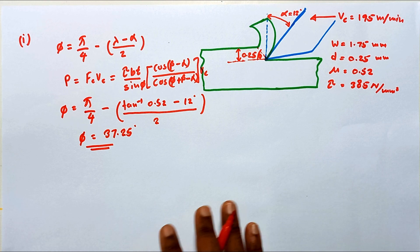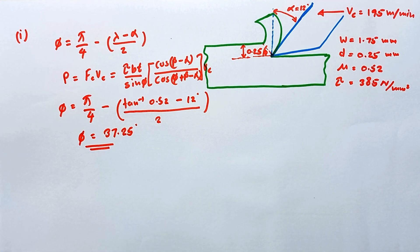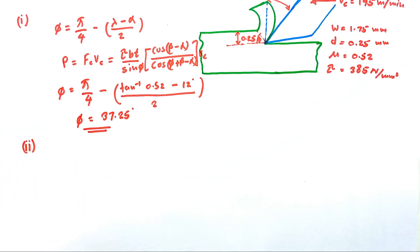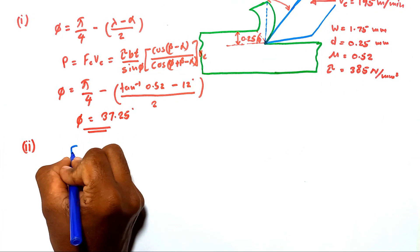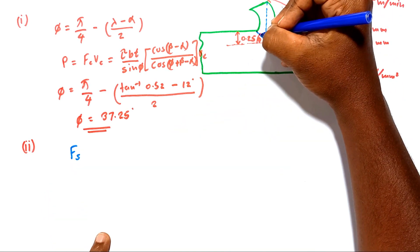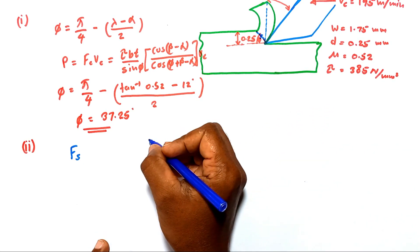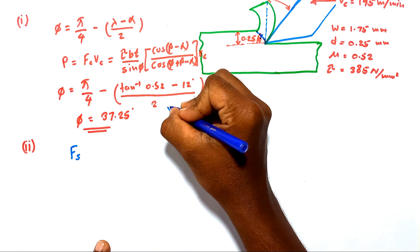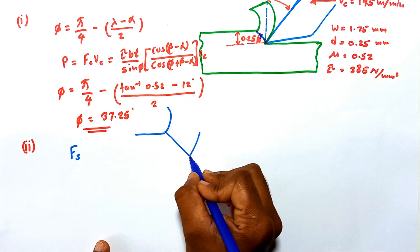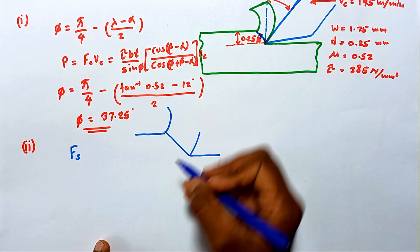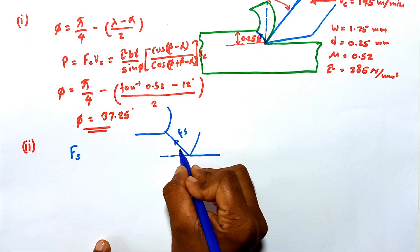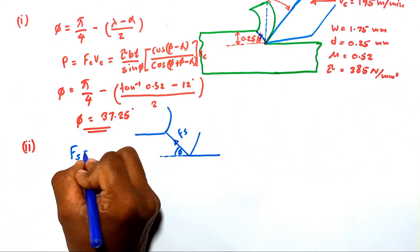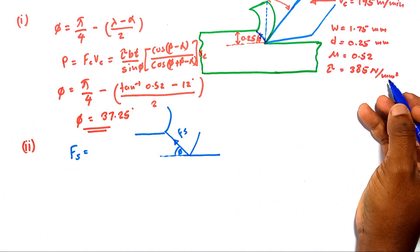The problem also asks for the cutting force and thrust component — how to find them. Let's see how to find the cutting force and thrust force. For the second part of the problem, first of all we need to determine the shear force acting along the shear plane. Let me draw a clear view for this. Here is the forming chip, and the shear force acts along this direction. This angle is equal to phi.